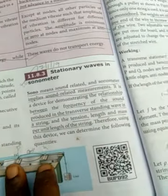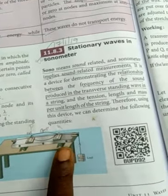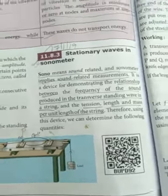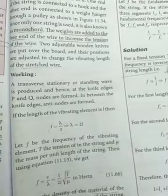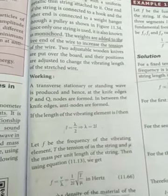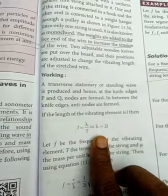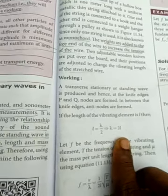So in the two knife edges, one and two, P and Q, in the two knife edges in between the antinodes creating. If the length of the vibrating element is L, then L equal to lambda by 2. So lambda value we are finding out now. Lambda by 2L.